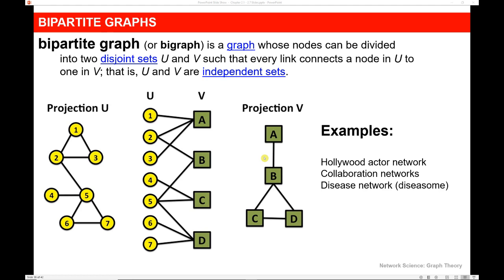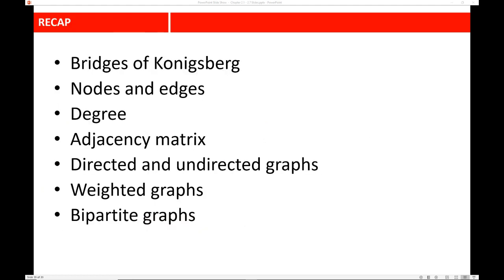In this section of the chapter, we introduced the Bridges of Königsberg problem — that was the start of graph theory. We talked about terminology we're going to use throughout the course, including nodes and edges, networks and graphs. We talked about the definition of the degree of a node, what an adjacency matrix looks like, the difference in notation and meaning of directed and undirected graphs, examples of weighted graphs, and an example of a bipartite graph. At this point, you should be able to look at a graph and describe some of its basic properties.